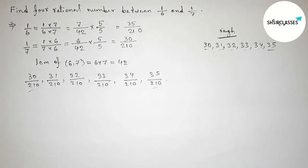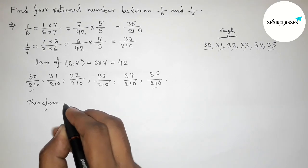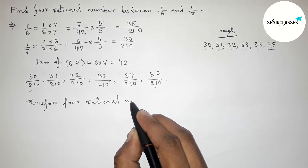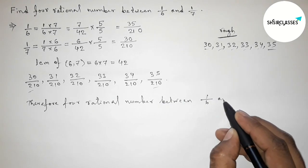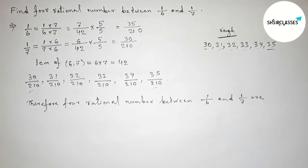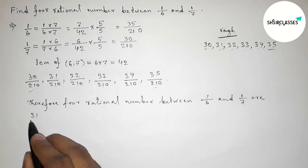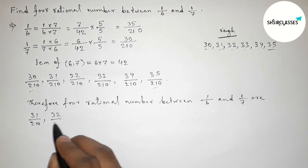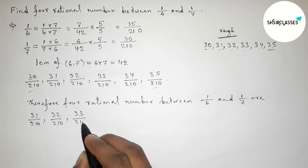So now between this and these we can get here four rational numbers. Therefore, the required four rational numbers between 1 by 6 and 1 by 7 are: first one is 31 by 210, then 32 by 210, then 33 by 210, then 34 by 210.